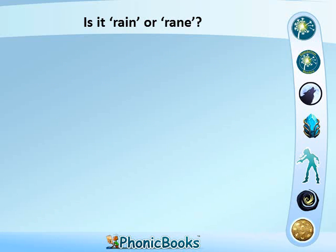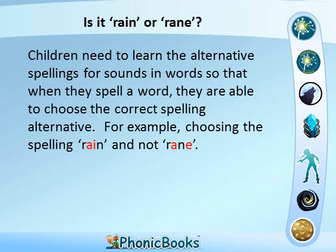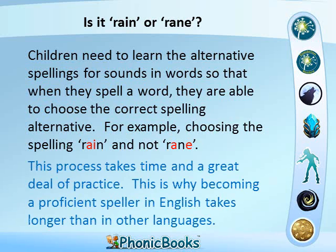Is it 'rain' or 'rane'? Children need to learn the alternative spellings for sounds in words so that when they spell a word, they are able to choose the correct spelling alternative — for example, choosing the spelling 'rain' with AI and not 'rain' with A split E. This process takes time and a great deal of practice, which is why becoming a proficient speller in English takes longer than in other languages.